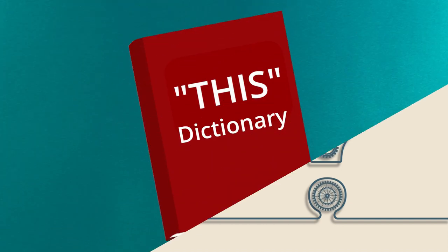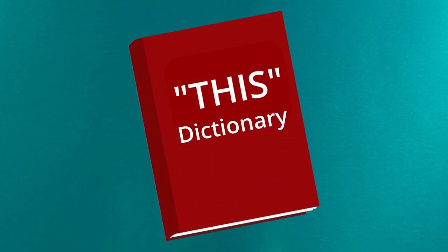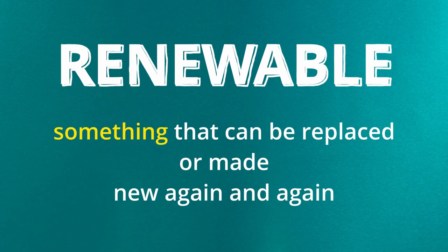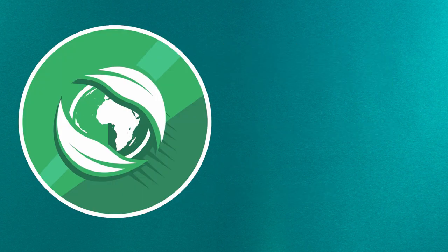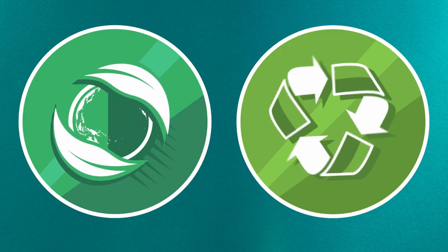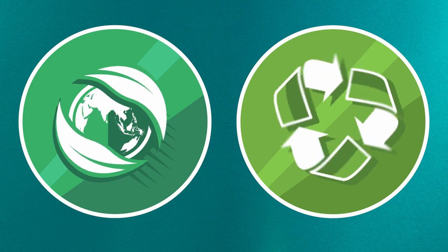To figure out if a source of energy is renewable or not, it first helps to understand what renewable is. According to this dictionary, the definition of renewable is something that can be replaced or made new again over and over. No matter how much you use, you will never run out because more can always be made available.